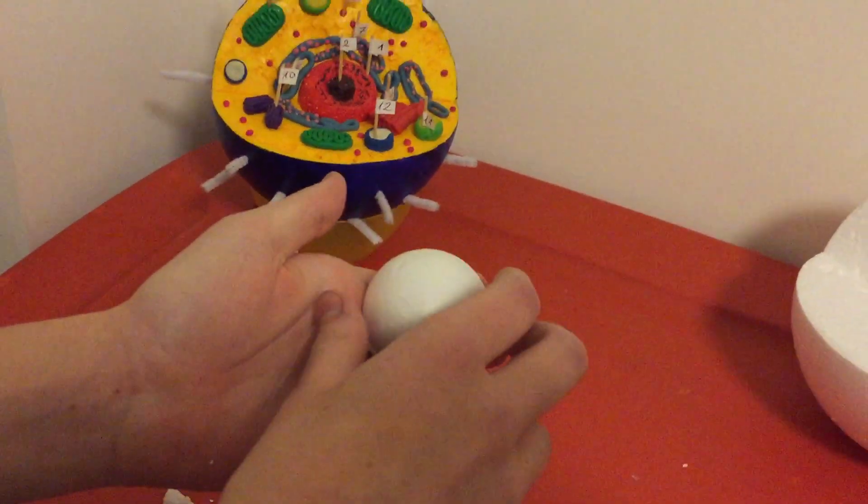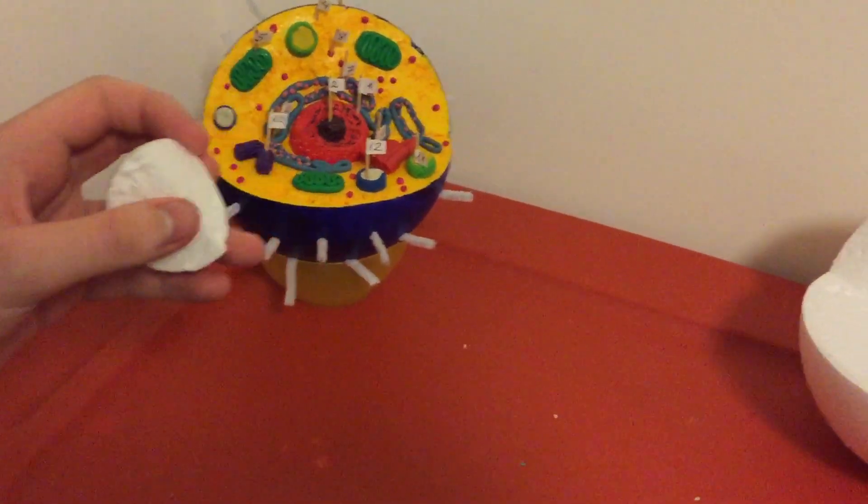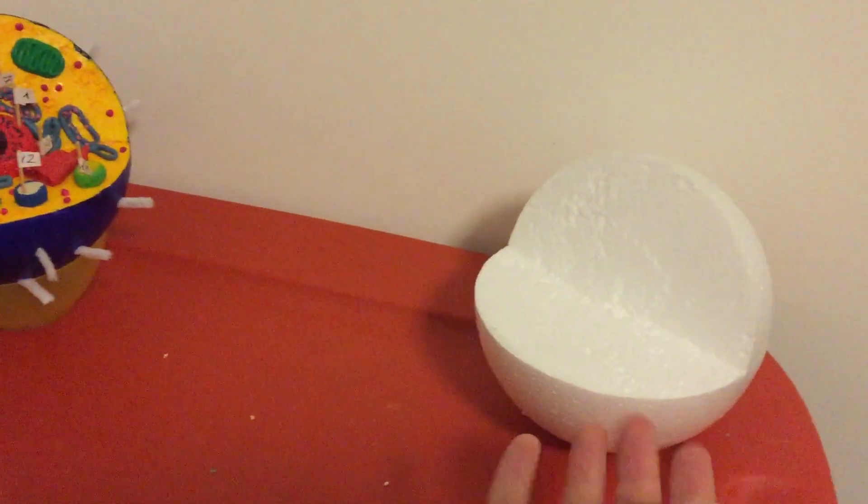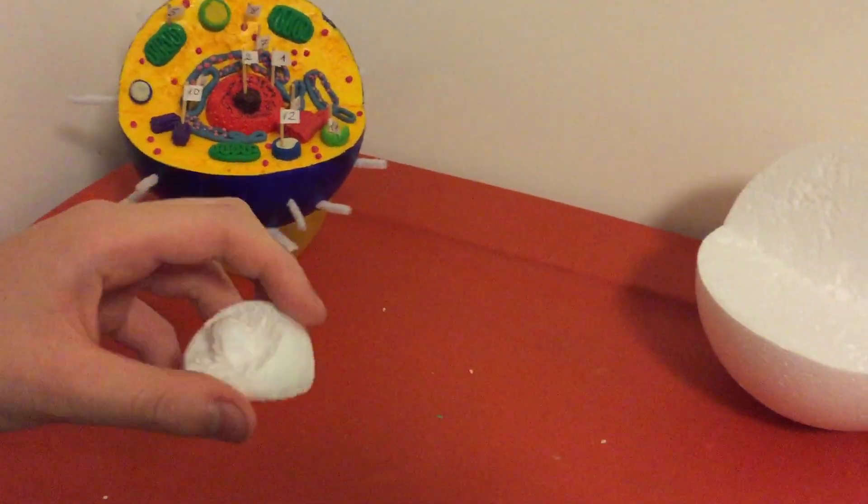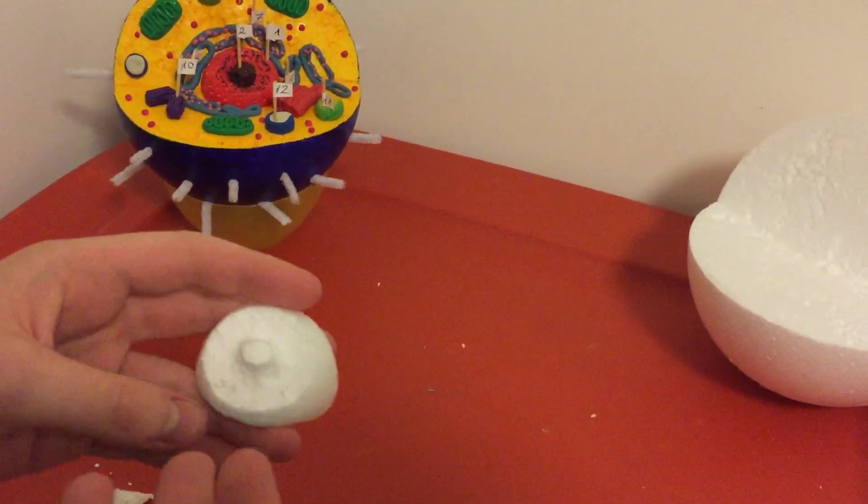So what we did was we cut it in half, then we cut off a smaller piece according to the angle of the ball, and then we sort of had to carve around in order to make the nucleolus.